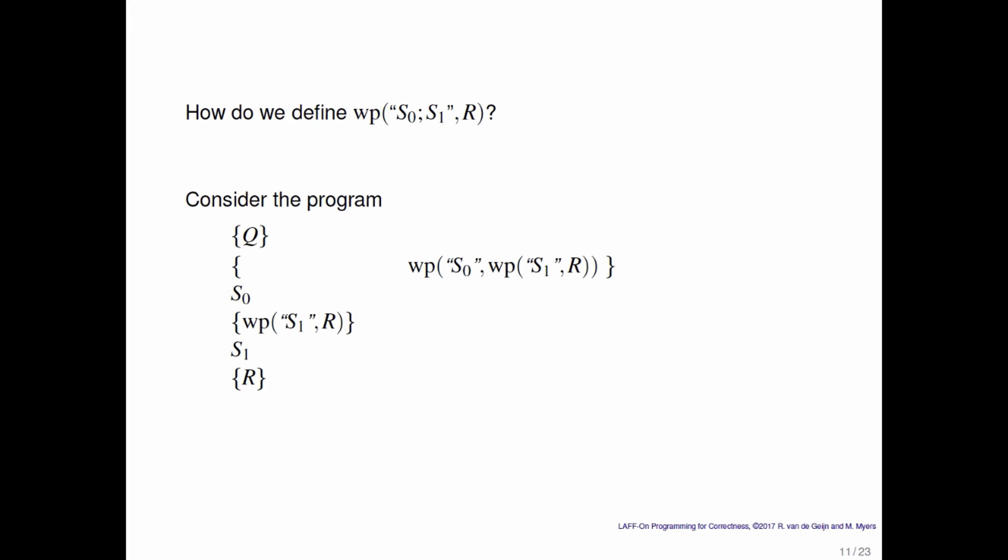So, whenever you say must be true, that means that that is the weakest predicate that describes the state that you must be in. And what that means is that we can take that to be the weakest precondition of the composed command S0, S1, if you want to finish in a finite amount of time in a state where R is true. So that's the definition.